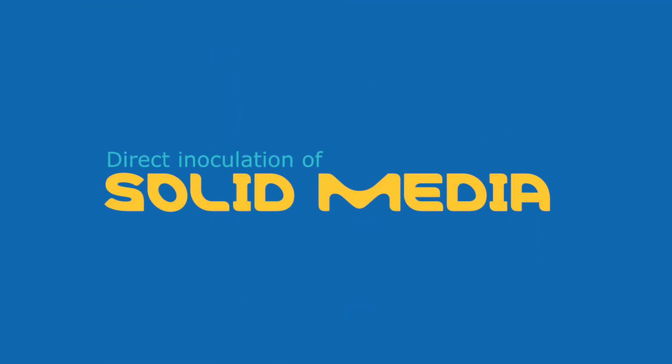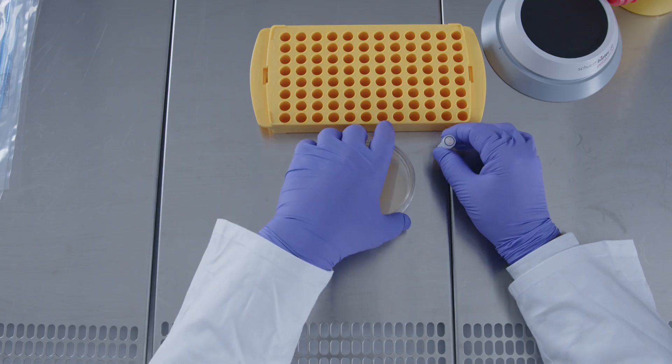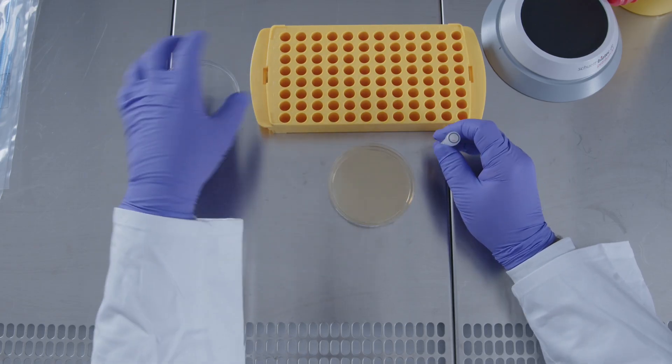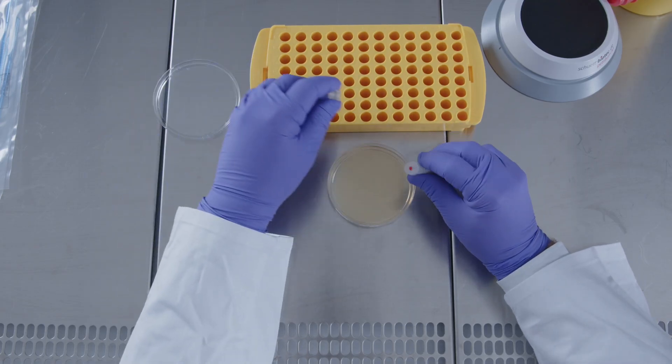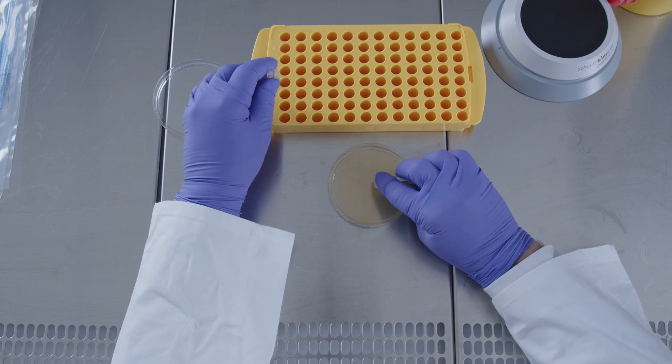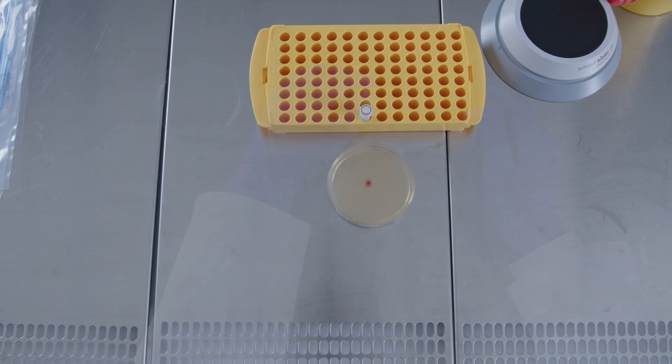The discs can be used to directly inoculate solid media. Open the vial and drop the disc onto the agar plate. Close the plate and leave at room temperature for the disc to rehydrate.